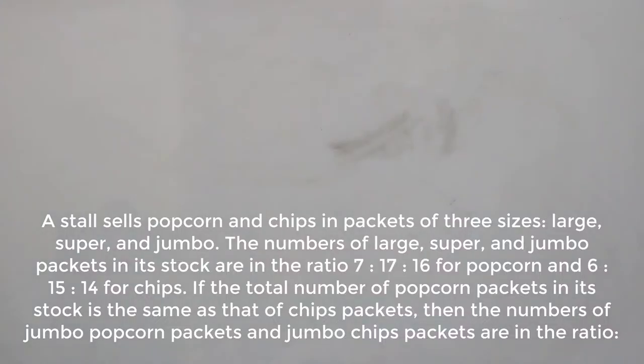This is a ratio and proportion question from CAT 2017 slot 1 paper. A stall sells popcorns and chips in packets of three sizes: large, super, and jumbo.